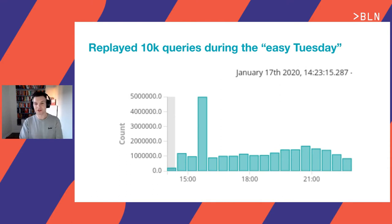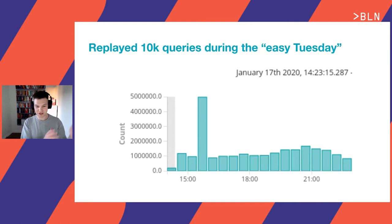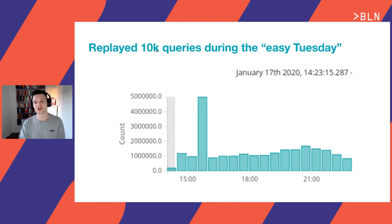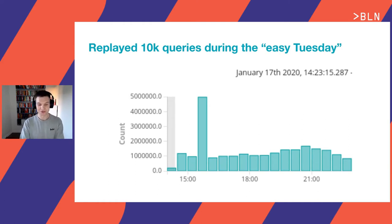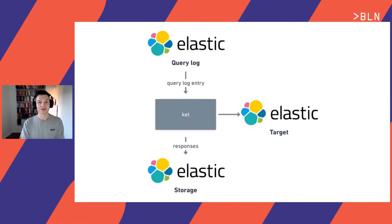To give a hint on how the performance looked when I joined Vinted: I started running performance experiments — basically taking some queries, replaying them back into production, and seeing how it goes. When I replayed a small batch of 10,000 queries during easy Tuesdays — our easiest days at Vinted — those 10,000 queries caused an additional 4 million slow queries ending up in the slow query log. That should give you some fear when you see such numbers.